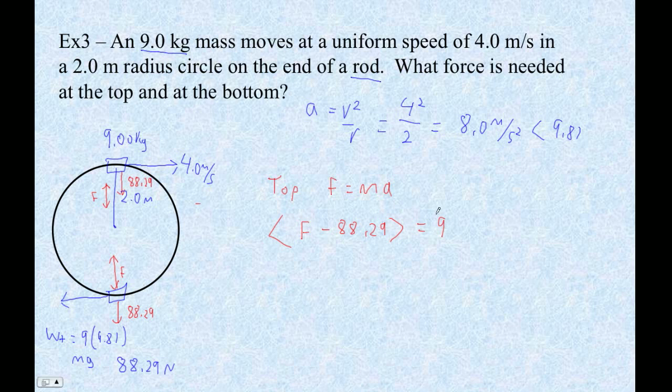So that's nine times. And then this acceleration at the top, you're actually accelerating toward the middle, which is down. So that's negative 8.0.